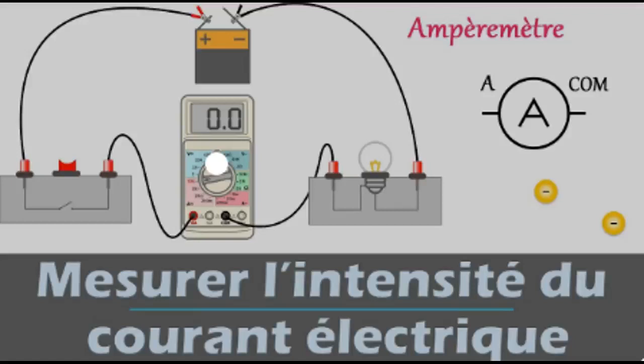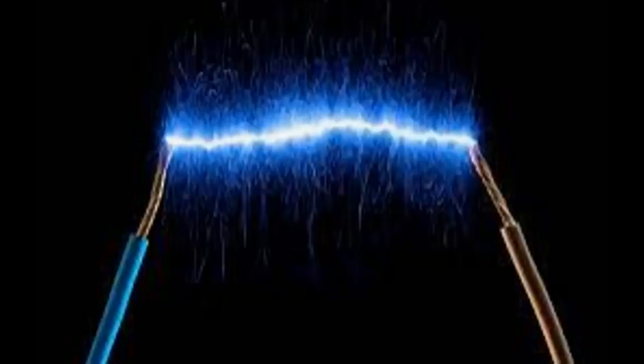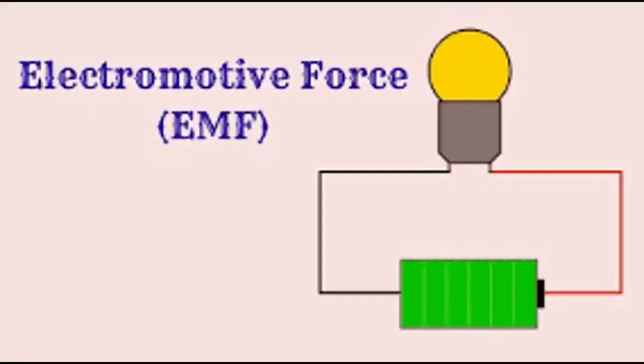You may also come across formulas that use the letter E instead of the letter V. The letter E stands for EMF or electromotive force, but don't worry about it. Just use V and simply replace V for E if you see it used in Ohm's law questions.